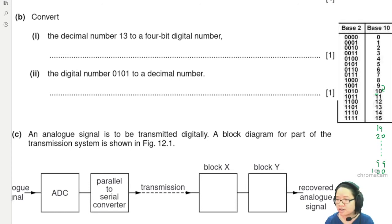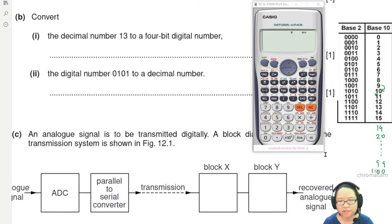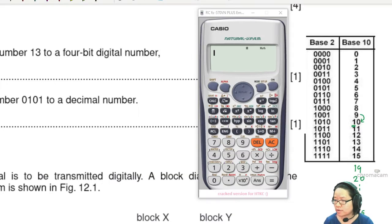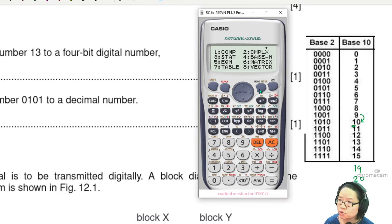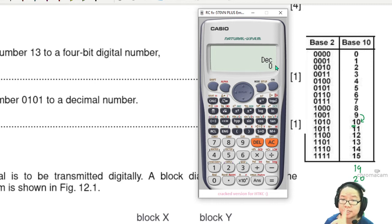If you want to just press your calculator, I'll teach you now. On your calculator, go to Mode, then select Base N — you'll see it there. Press 4. DEC stands for decimal, which is base 10. Tell the calculator: this number, 13, is in decimal.